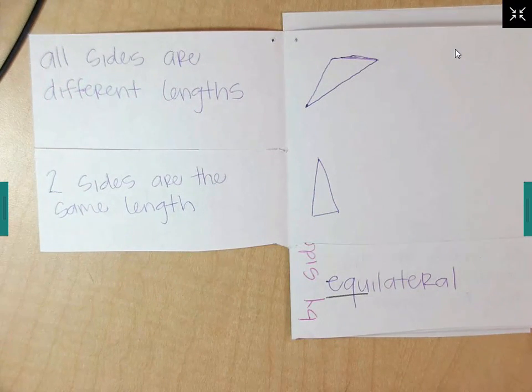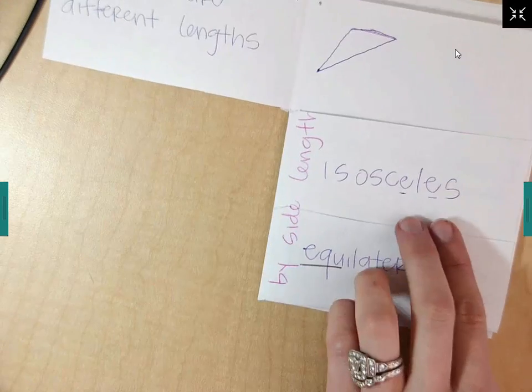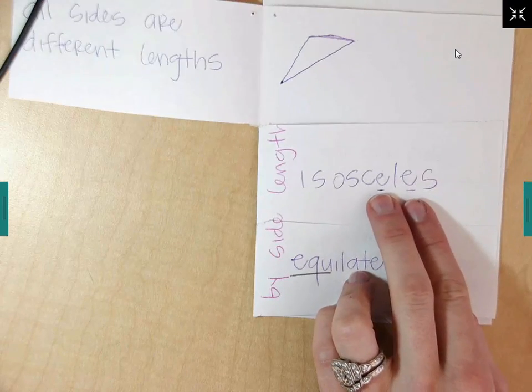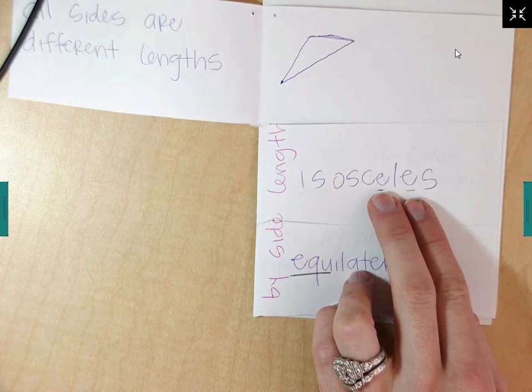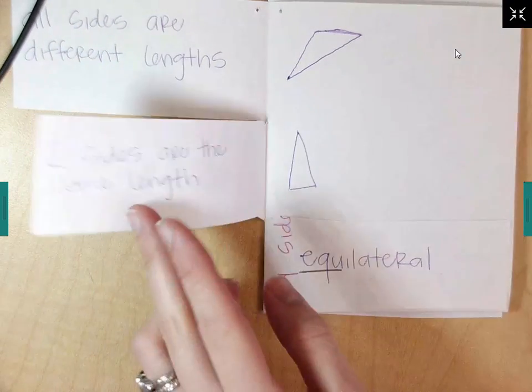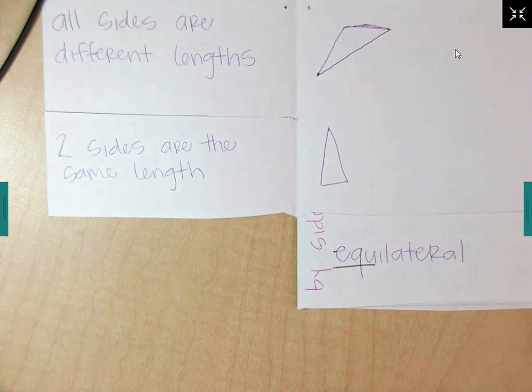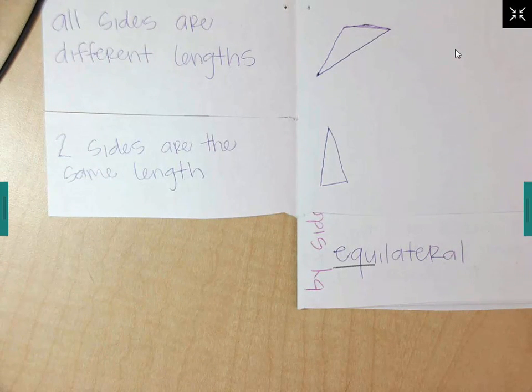The second one is isosceles. We've got two sides that are the same length. One of the ways I remember isosceles is because it's got these two E's kind of side by side. Two sides are the same length.